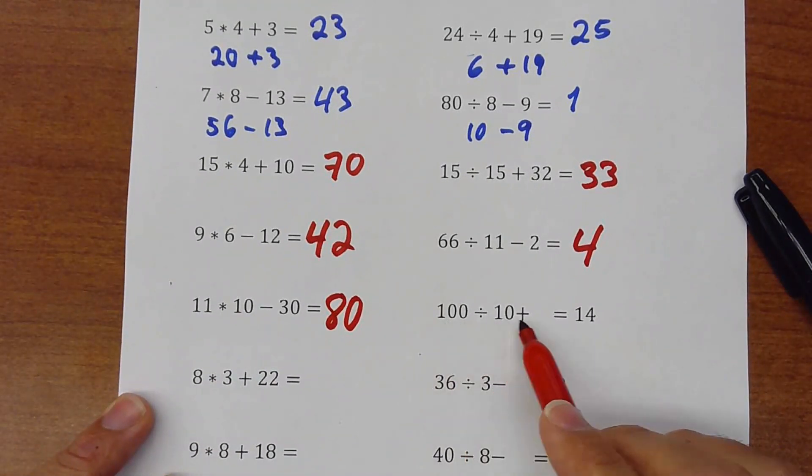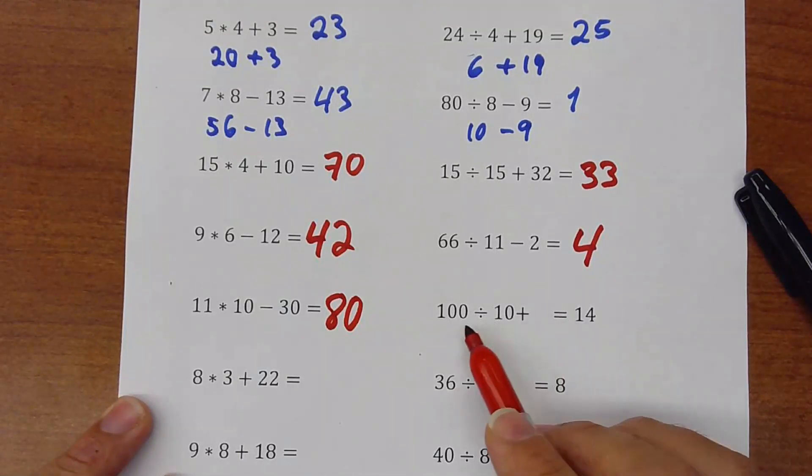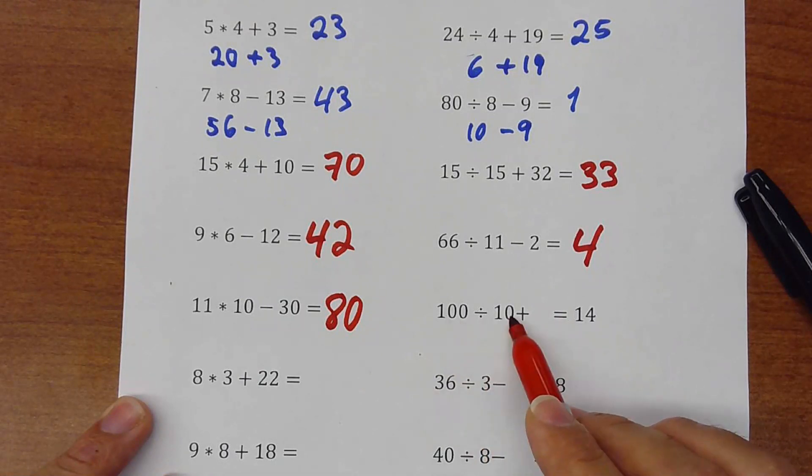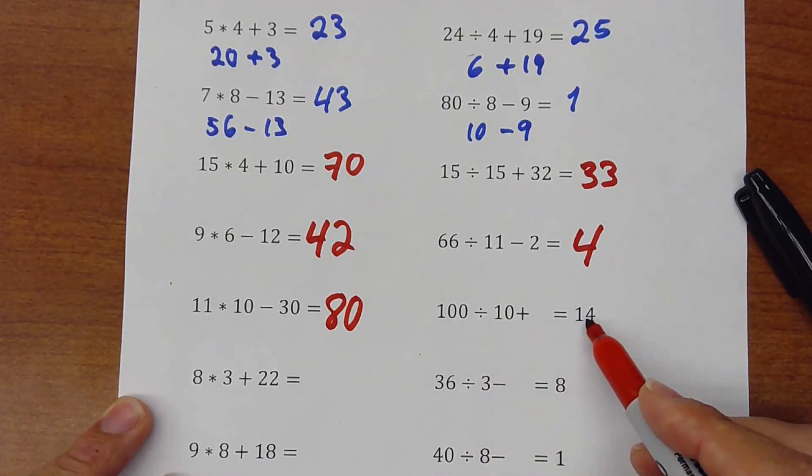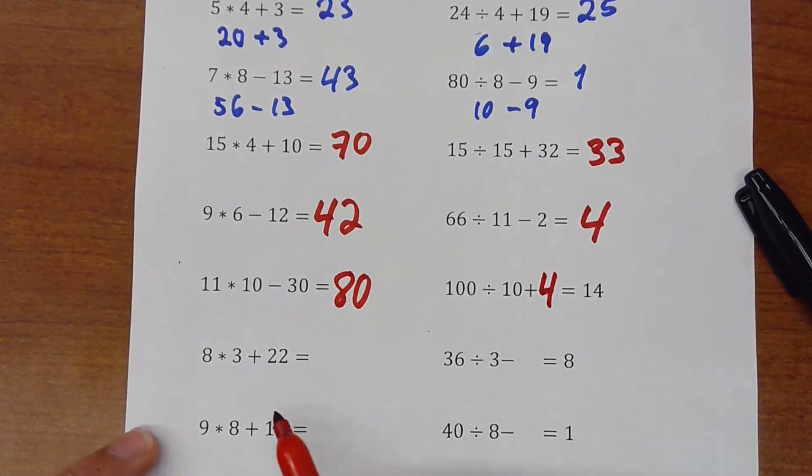This divided by this is just 10, plus a number will give me 14. So this is a different one. I don't have this number here but 100 divided by 10 is 10, plus one number is 14. So I can figure it out as a 4. Very easy, right?